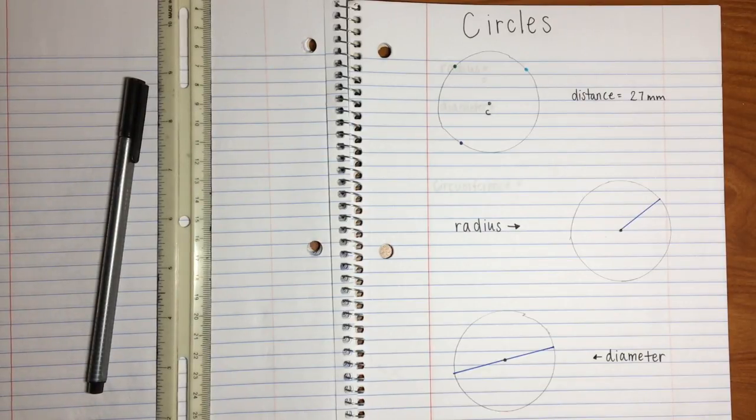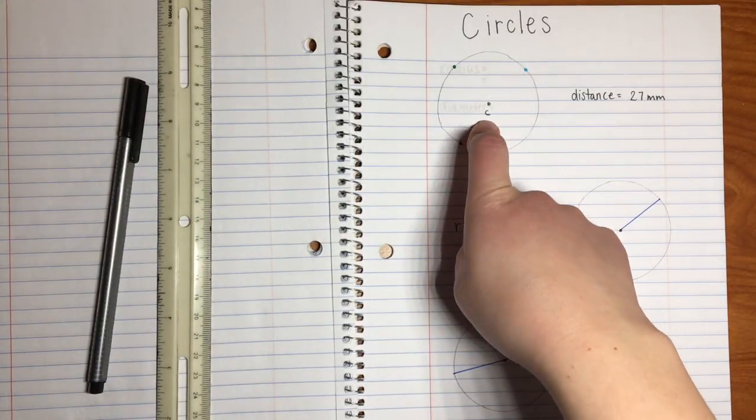With an understanding of the relationships between terms, students can build upon these concepts in future math classes. The base definition is, a circle is a set of points that are equidistant from a center point. In this case right here, our center point is C.